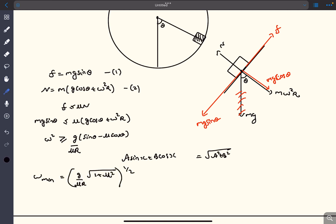From here the maximum value of sin theta minus mu cos theta would be square root of 1 plus mu squared. So which means omega minimum at which we have to rotate the cylinder would be this particular value.